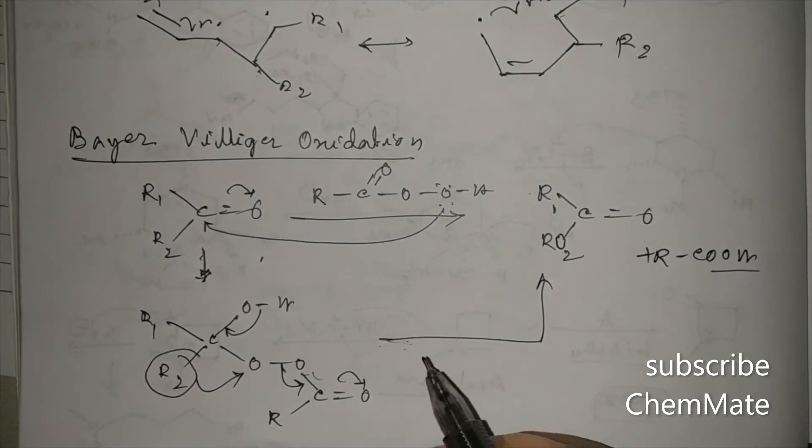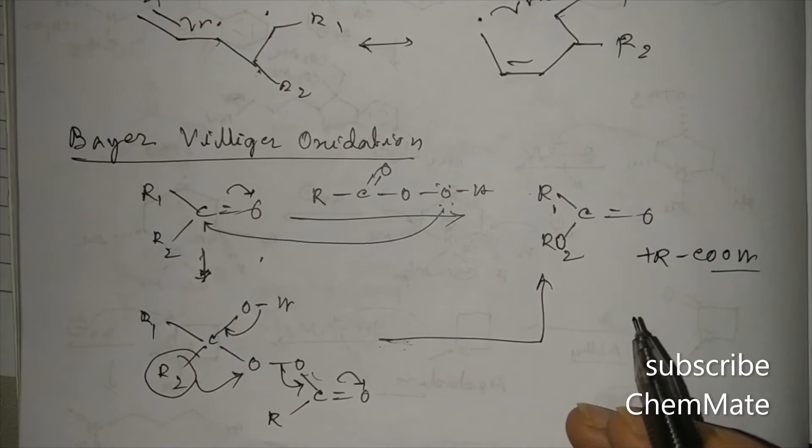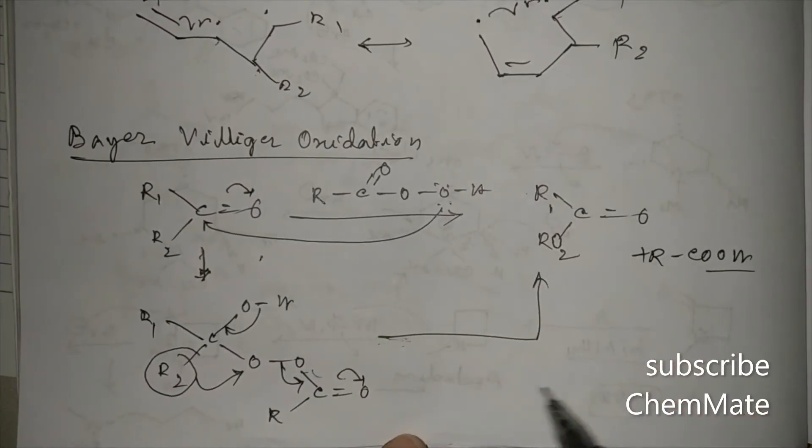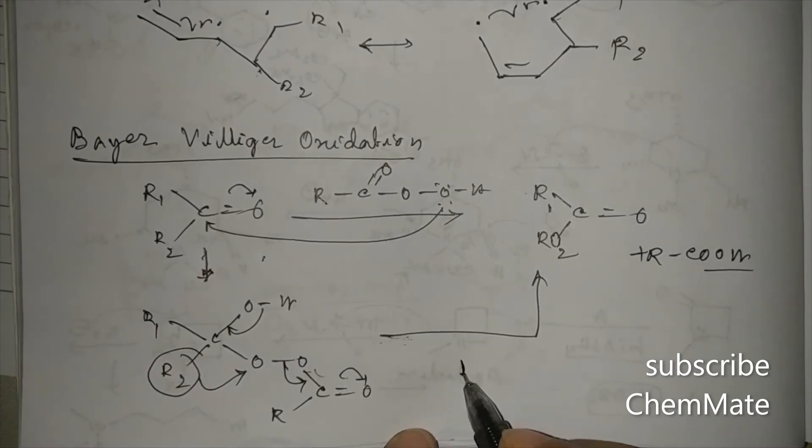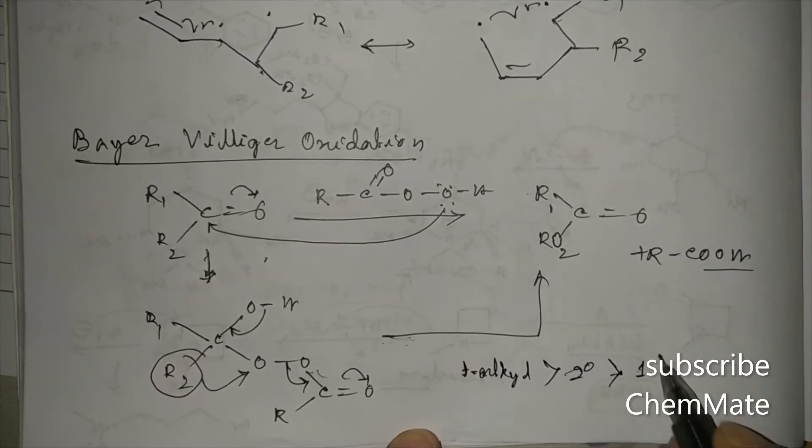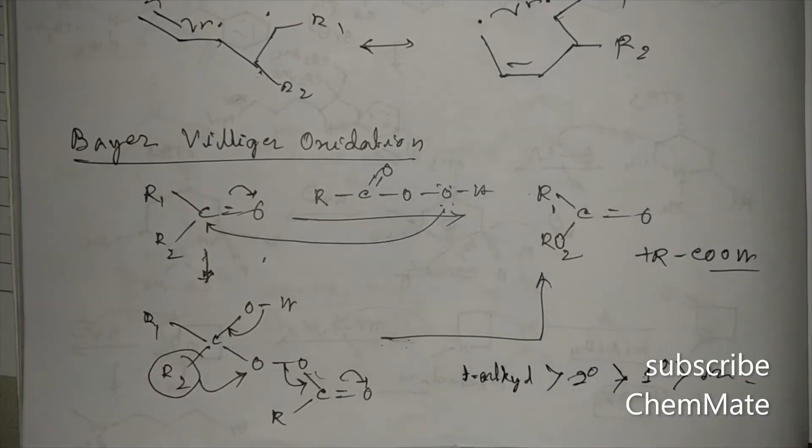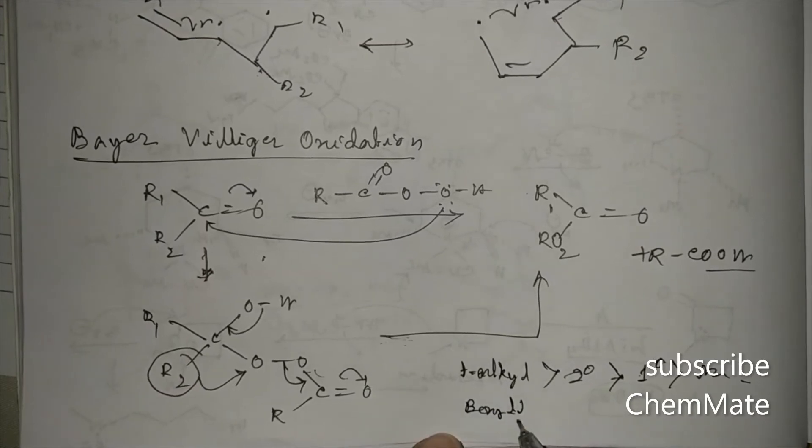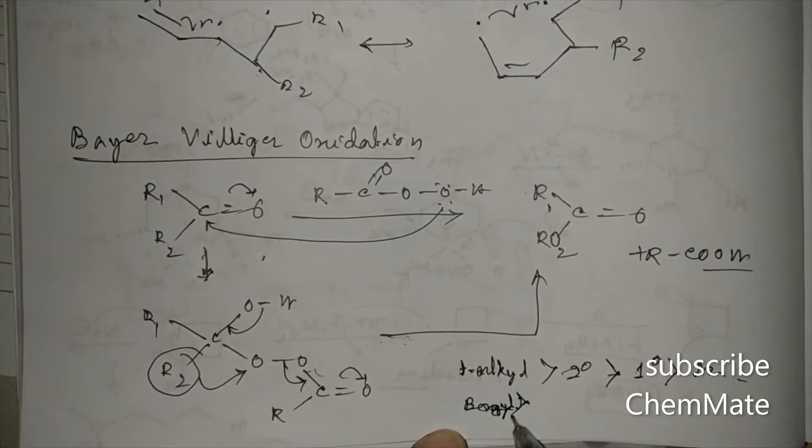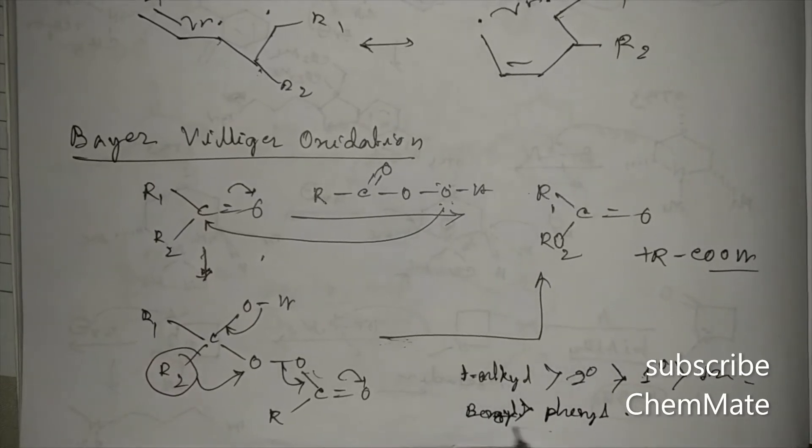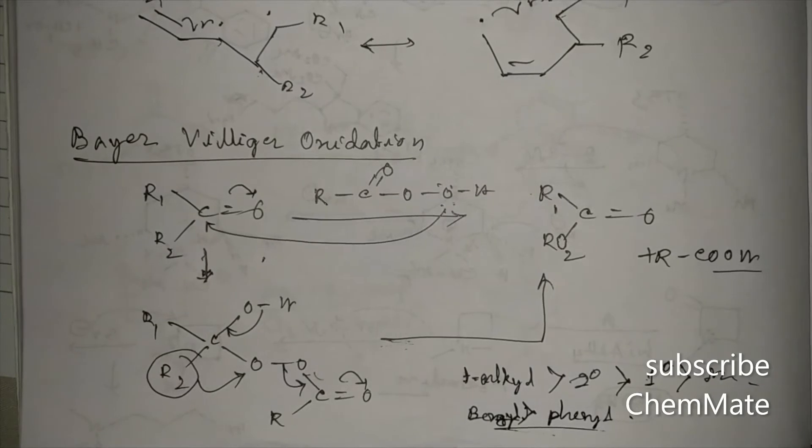Now which group migrates? Here the group which can stabilize their positive charge, that group only migrates. That is the migratory aptitude: tertiary alkyl > secondary > primary > methyl; benzyl > phenyl. This is the migratory aptitude.